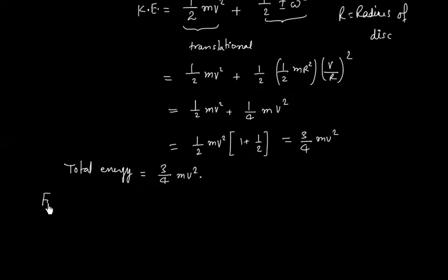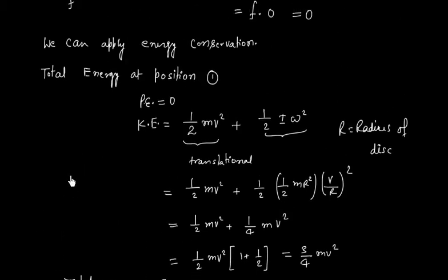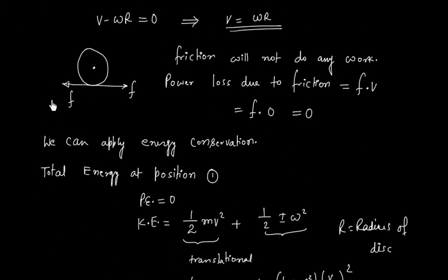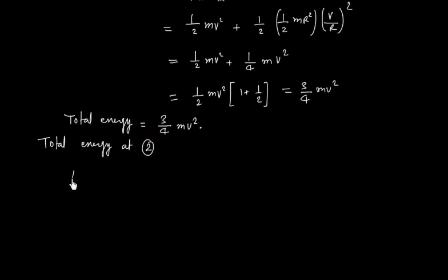Now let us find final total energy, that is situation number two. Now since this is maximum height, at this point velocity should be zero. Otherwise if velocity is not zero then it will go some more height. So in that case it is not the maximum height. So at maximum height velocity will be zero.